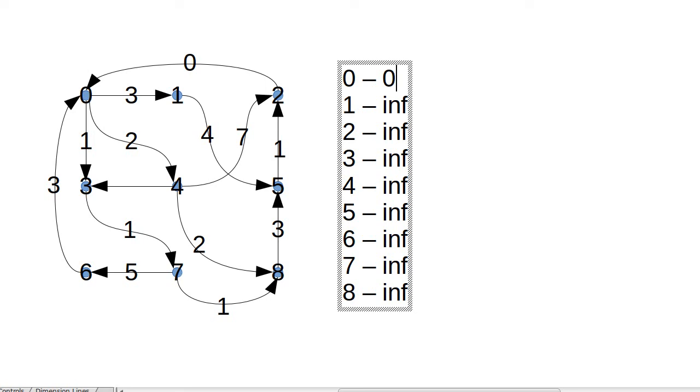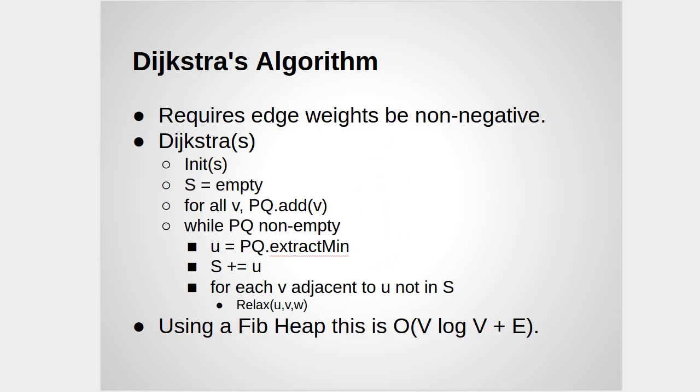One thing to note about Dijkstra's algorithm that's not very clear here, but we'll make it clear in just a bit, is that when you relax things, you have to change where they are in priority queue. So while our relax did not have a call to decrease key, that winds up implicitly happening, because the priority for things in the queue is the distance, and relax has the ability to change those distances.